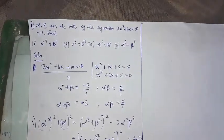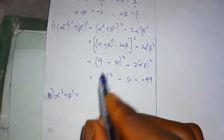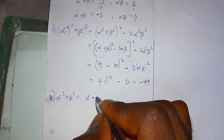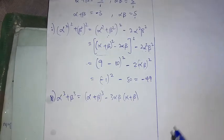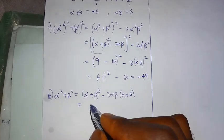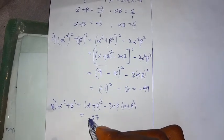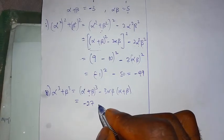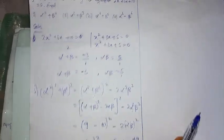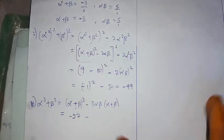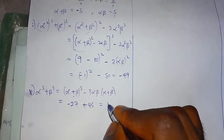For part (c): alpha cubed plus beta cubed. Using the identity, this equals (alpha + beta)³ minus 3·alpha·beta·(alpha + beta). Alpha plus beta is minus 3, so (−3)³ is minus 27. Then minus 3 times 5 times minus 3 gives plus 45. So alpha³ + beta³ equals minus 27 plus 45 equals 18.